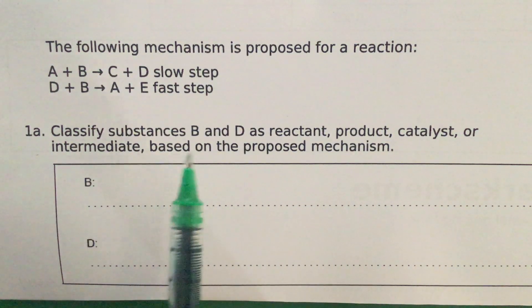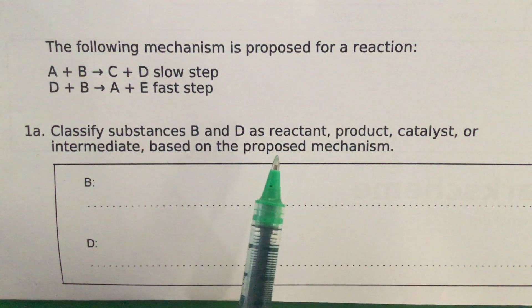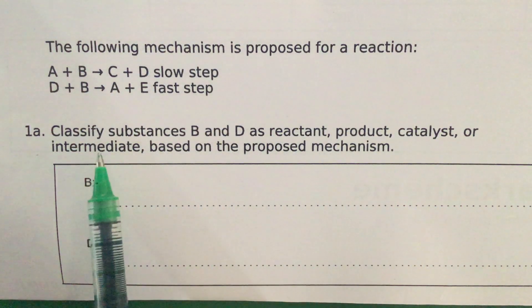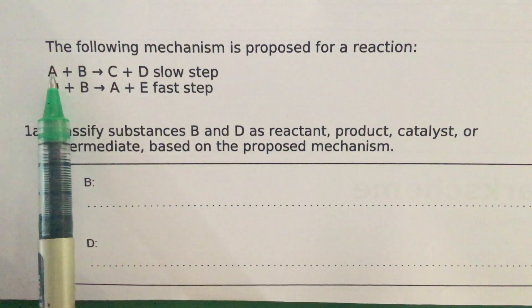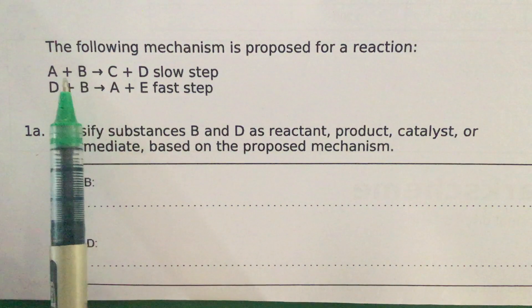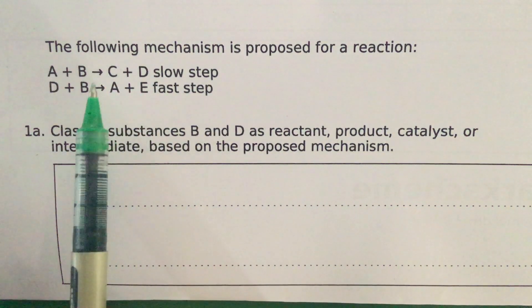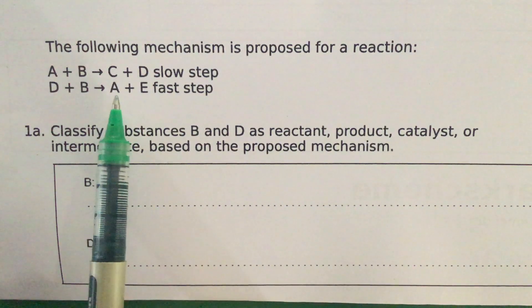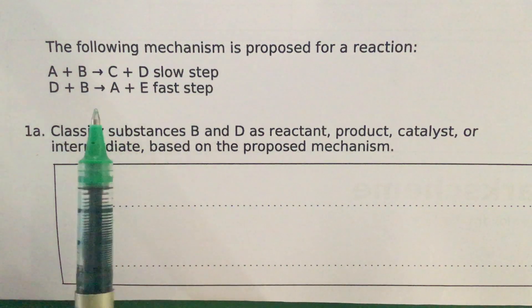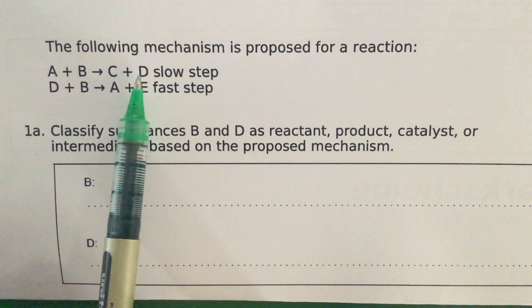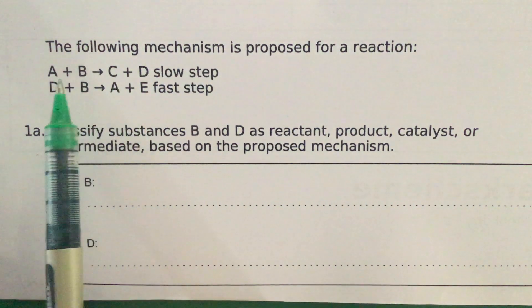now. Classify substances B and D as reactant, product, catalyst, or intermediate. Now substance A, I pointed out, is a catalyst. It's involved very much in making that slow step happen, but it's regenerated at the end of the completed reaction. Then you have D, which is produced at the end of the slow step but then becomes an input